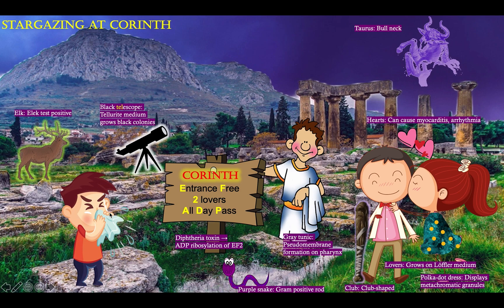Here we've got a guy that is not feeling too well after his trip to Corinth — he's sneezing and coughing. That will help you remember that this is spread by respiratory droplets, and it also causes a croup-like cough.